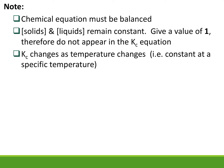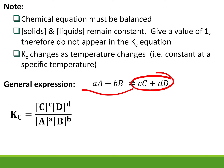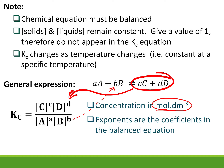In general, products go to the top of the expression. The key difference now is that the balancing numbers — the coefficients — become exponents. So if a coefficient is two or three, it becomes squared or cubed. The capital letters C, D, A, B represent the actual substances, like H₂O or chlorine. Concentration must be in moles per decimetre cubed, and the exponents are the coefficients from the balanced equation.